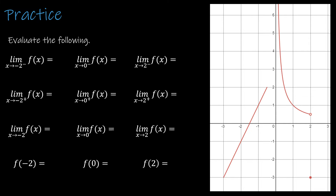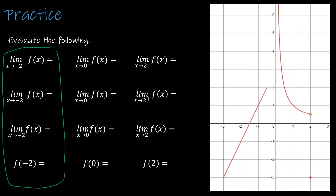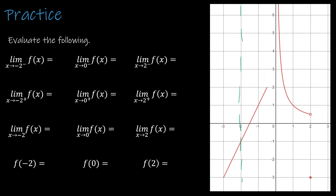Now let's do some practice with one-sided limits and where limits may fail to exist. Starting at X equals negative 2, I'll draw a dotted line to mark where we're working. The limit as X approaches negative 2 from the left gives a Y value approaching negative 1. From the right, the Y value is also approaching negative 1. Because both one-sided limits are the same and it's an actual finite value, the limit exists and equals negative 1.